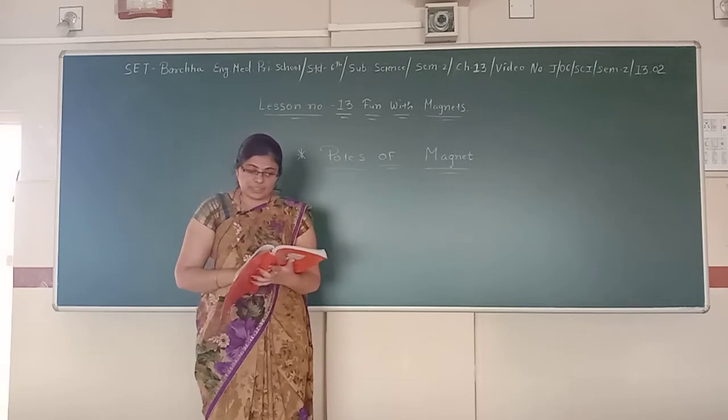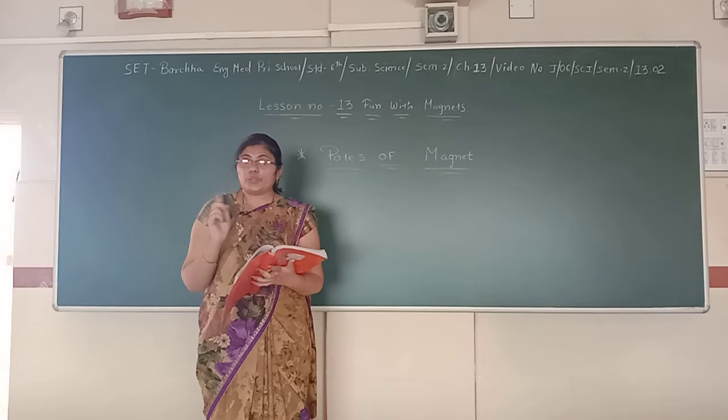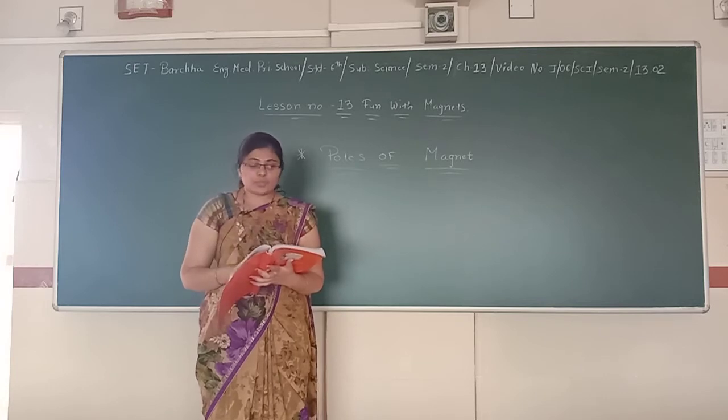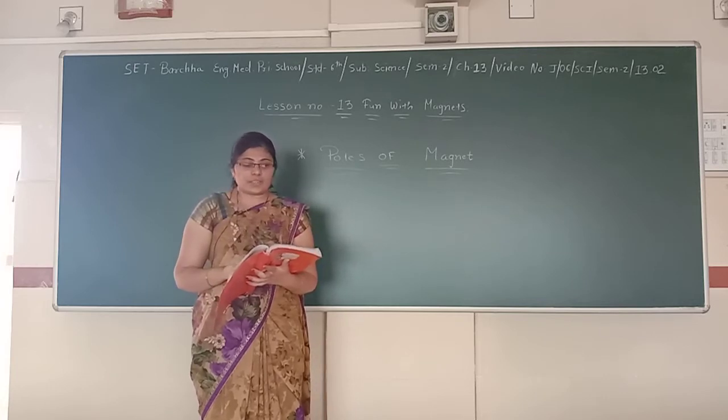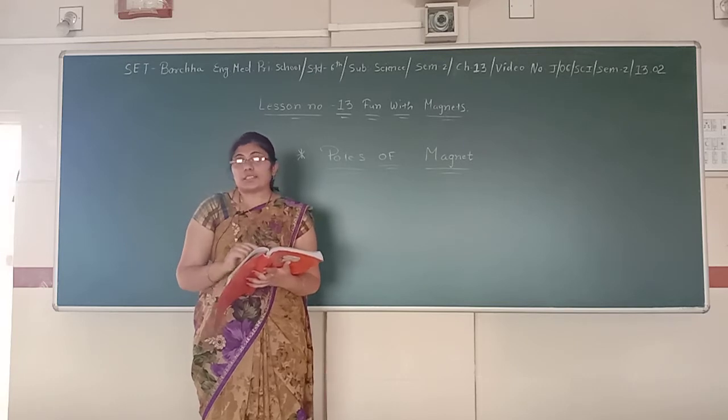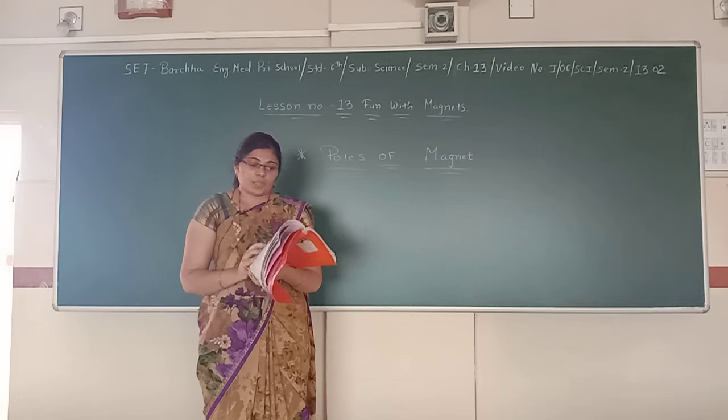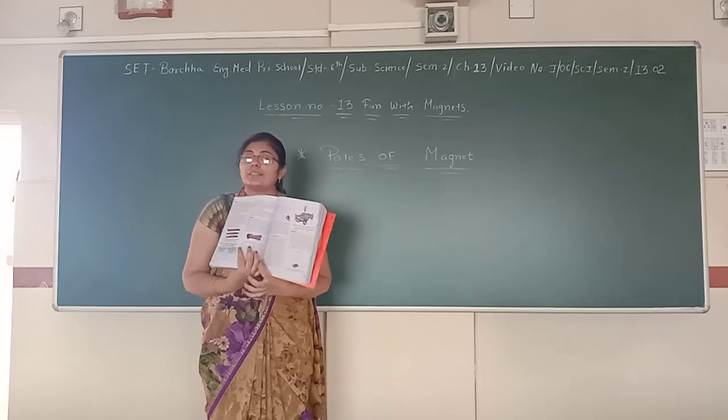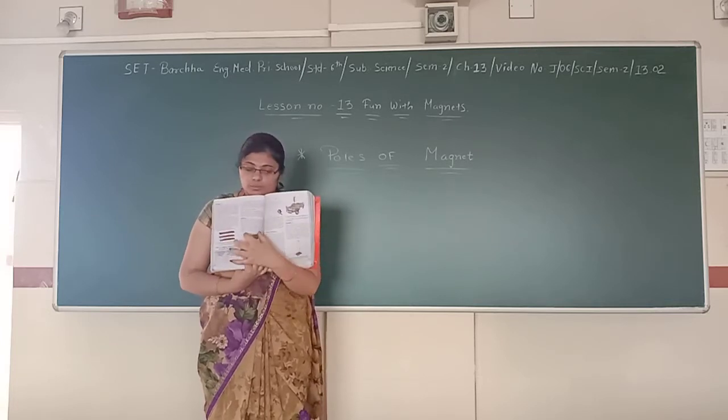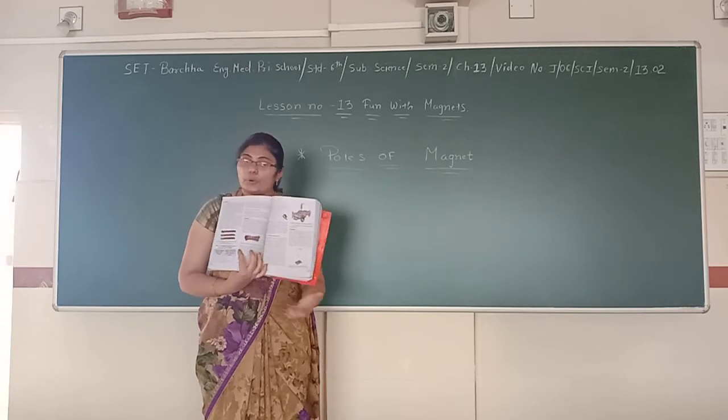What do you observe? You observe that the iron filings stick to the magnet. Do iron filings stick all over the magnet? No. Do you observe that more iron filings get attracted to some parts of a magnet than others? Yes, as you can see in figure 13.7, the iron filings stick to the end part of a magnet that is called pole.